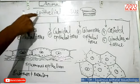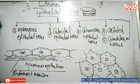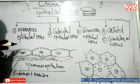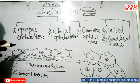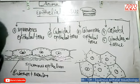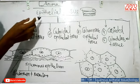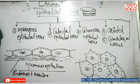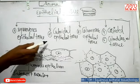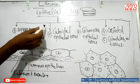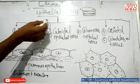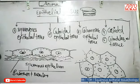The general functions of epithelial tissue: it mainly provides protection to the parts of the body. It helps in absorption of water and digested food. It also helps in secretion or elimination of nitrogenous waste material.